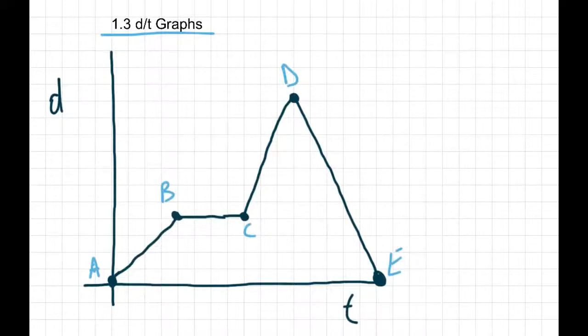Because we have distance on the side and time on the bottom, what you've got to be able to do with these graphs is understand what's happening as time is going on, where distance is either we're getting further and further away or closer to where we started. So point A on this graph is considered like home base and we're going to get further and further away from that.